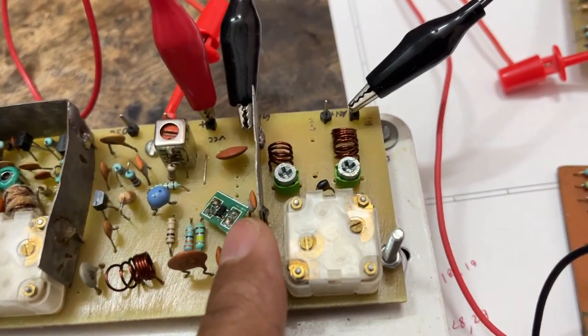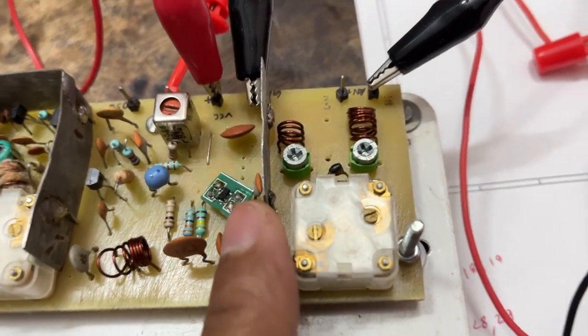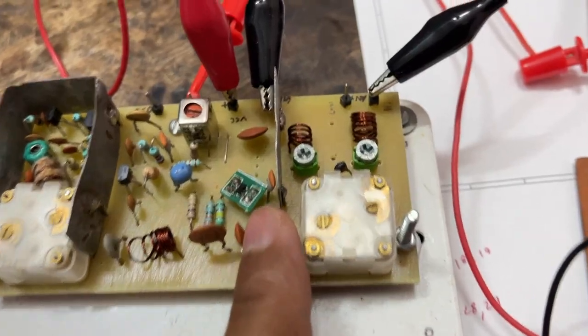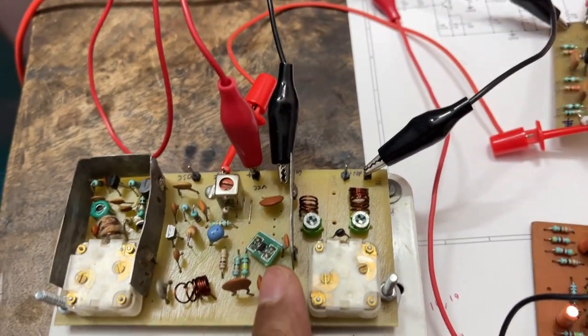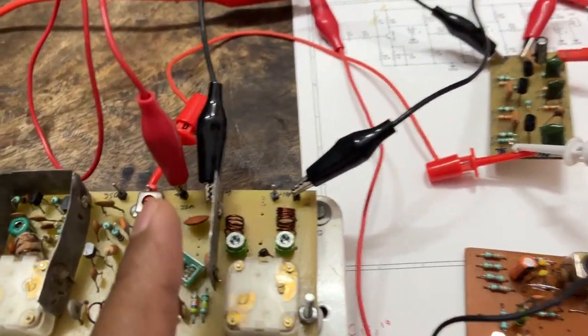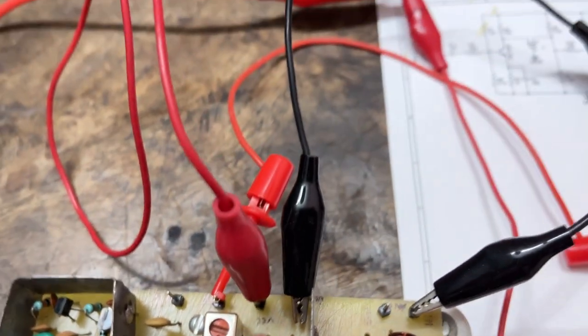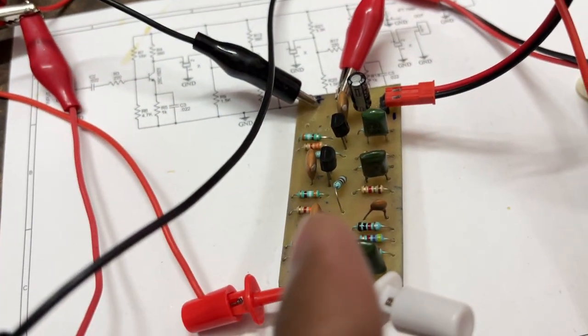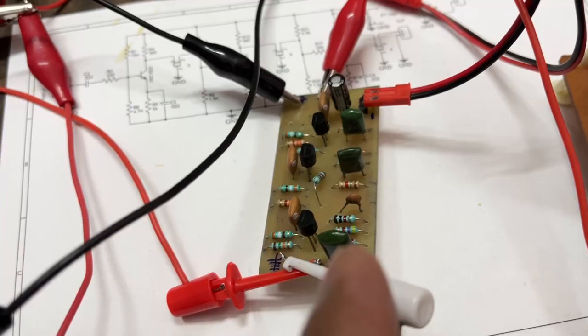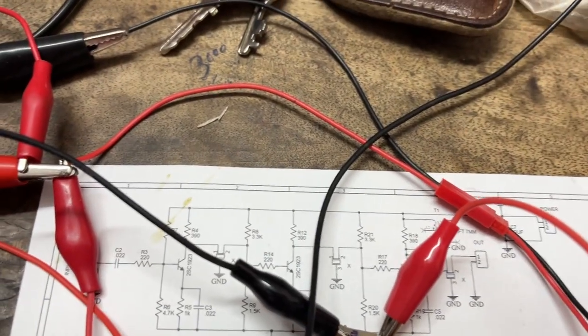And this is the single dual gate MOSFET amplifier. The IF goes to this amplifier section, this is the circuit.